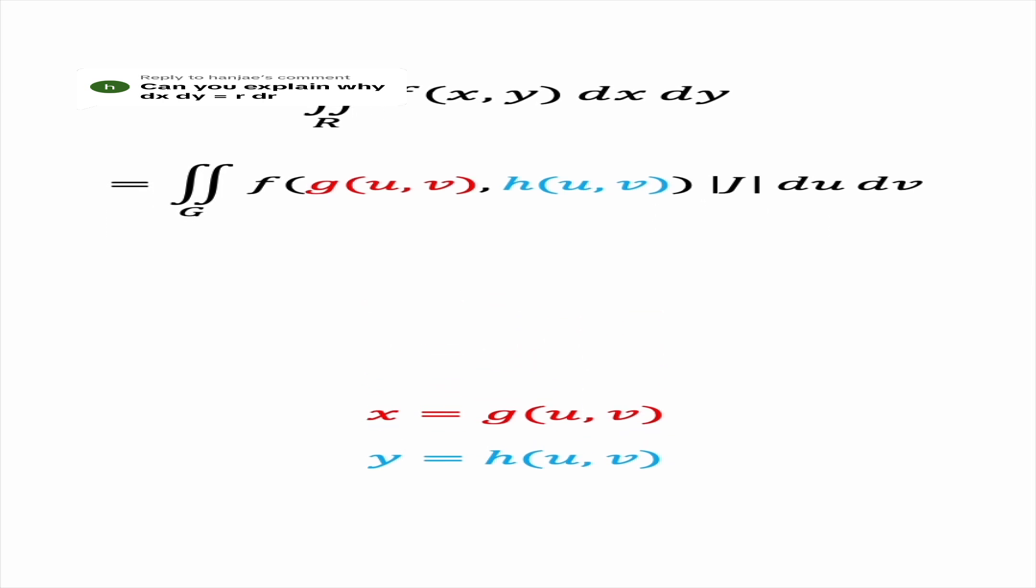It turns out that we have to multiply by an additional factor which is the absolute value of J. This J is called the Jacobian and it's a function of the two new variables u and v, and it's defined as follows. It's a two-by-two determinant of all the partial derivatives: x with respect to u, x with respect to v, y with respect to u, and y with respect to v.